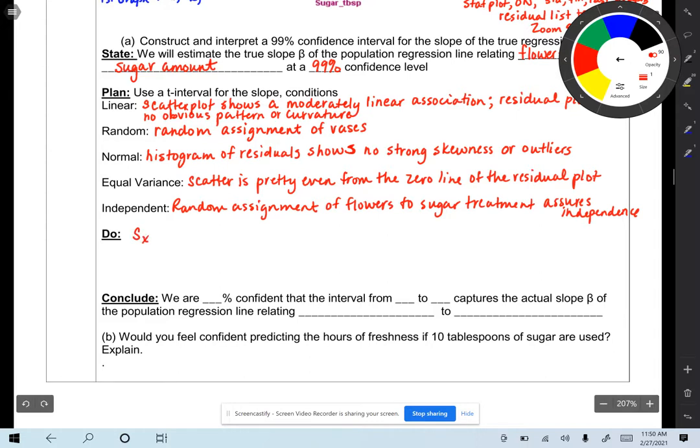So the easiest thing to do is find sx, which is the standard deviation of our x variable, and it gave me 1.168. And that is a one variable stat. So one variable stat on list one. That'll give us sx.